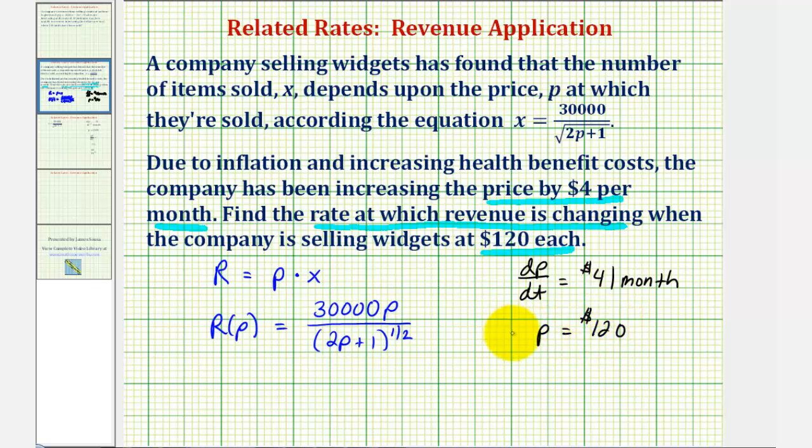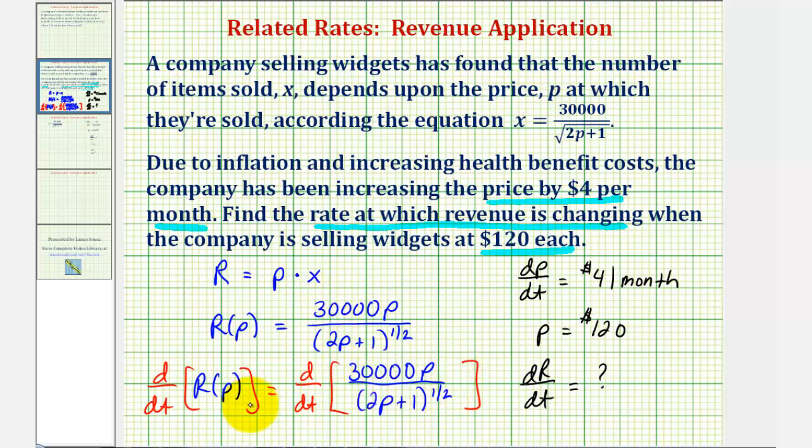And our goal here is to find dR dt. So to find dR dt, we'll have to differentiate both sides of this equation here with respect to t. So we'd have the derivative of r of p with respect to t equals the derivative of this quotient with respect to t. Notice to find this derivative here, we'll have to apply the quotient rule as well as the chain rule, because we're differentiating with respect to t, not just p. Let's go ahead and do this on the next slide.